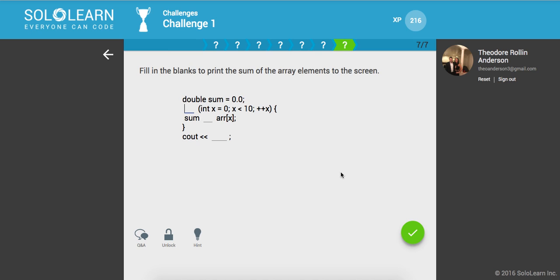Fill in the blanks to print the sum of the array elements to the screen. So we'll do for int x equals 0, x is less than 10, plus plus x. And we'll say sum plus equals array of x. So it's going to keep accumulating and reducing. And then let's just output the sum at the very end. Awesome.